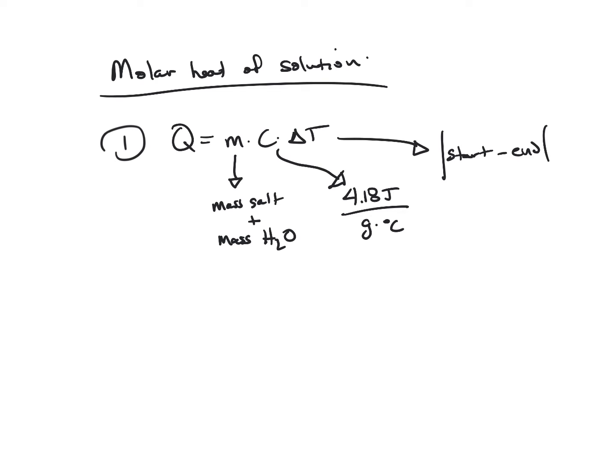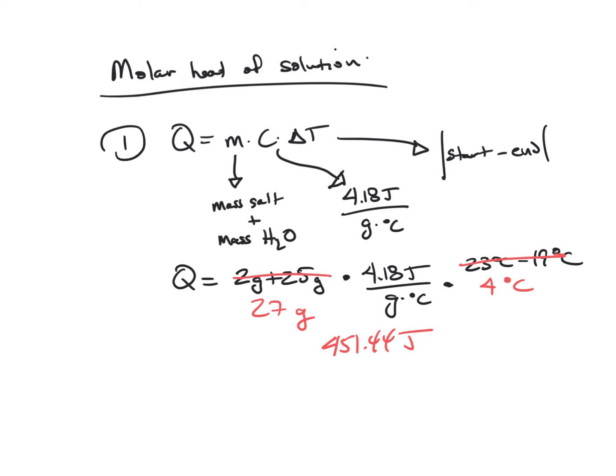Let me give you an example. Let's say Q equals—in my case I use 2 grams of salt plus 25 milliliters of water, which is also 25 grams of water, so that's 27 grams. I'm going to multiply that by 4.18 joules over grams times degrees Celsius. In my case, my starting temperature was 23 degrees Celsius and my ending temperature was 19 degrees Celsius, so when I subtract those two I get 4 degrees Celsius. Multiplying these three things together: 27 times 4.18 times 4 gives me a Q or heat of 451.44 joules. That is step one—you're going to need to do that for each one of your salts.